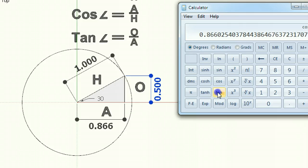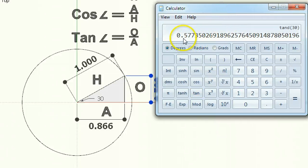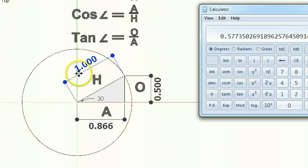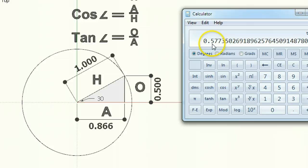So what about tan. If I put 30 in, click tan, I get the length of 0.577. But where is that in relation to anything? What is this 0.577? I'm going to show you where that value is in this setup.